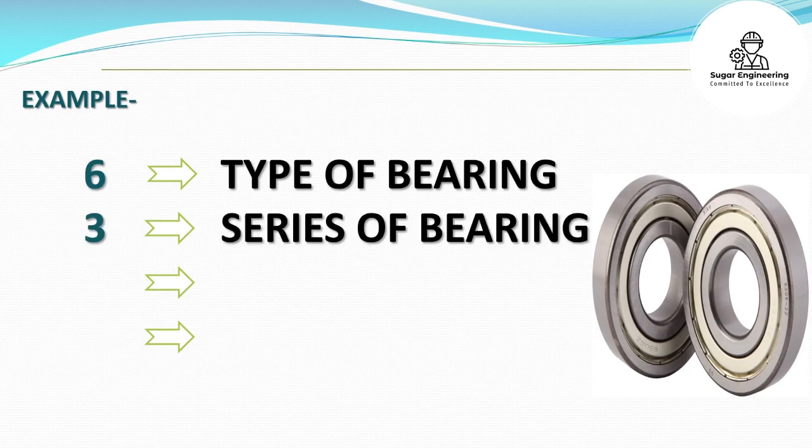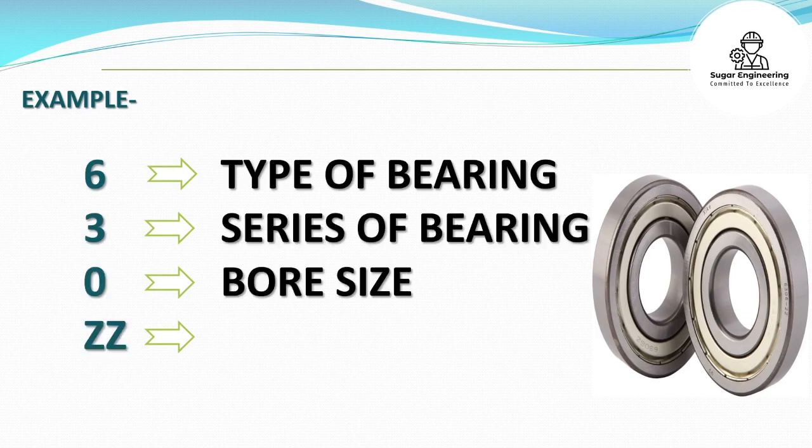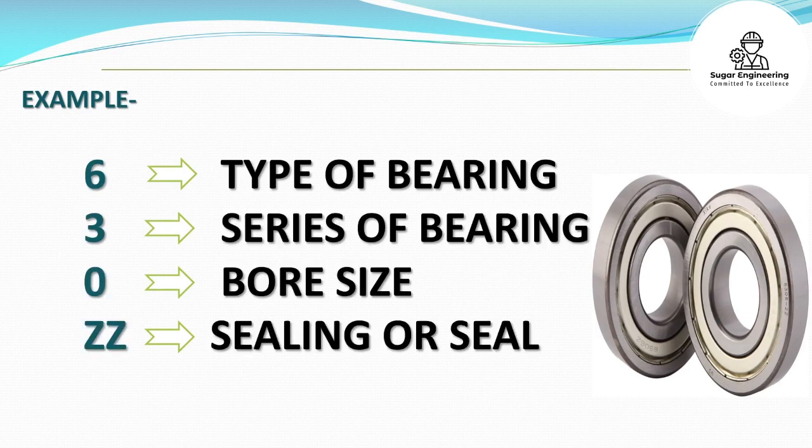In bearing number 6306ZZ: the digit 6 indicates the type of bearing, the digit 3 indicates the series of bearing, the digits 06 indicate the bore size, and ZZ indicates the sealing or shield type.